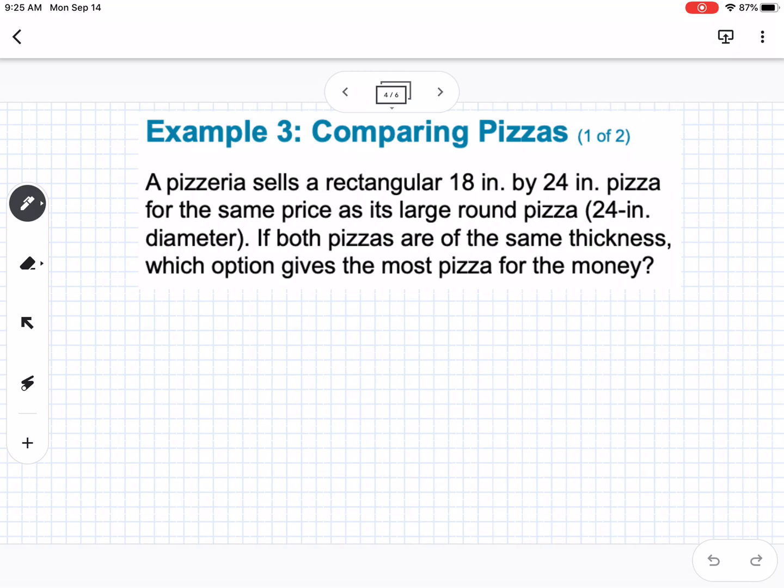So what we'd want to do is, if we're not worrying about thickness, we're not worrying about volume, we're just worrying about area. So we know that the area of a rectangle is length times width. So our rectangular pizza would be 18 times 24, which is 432 square inches.